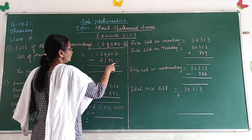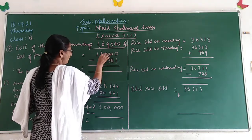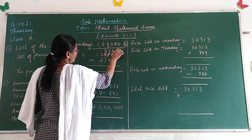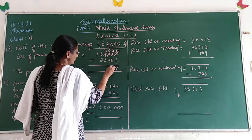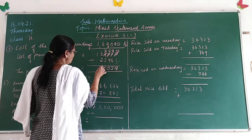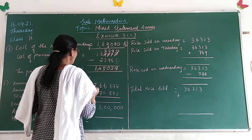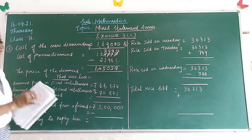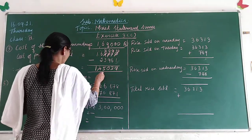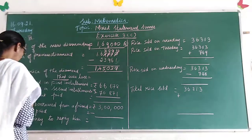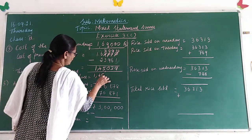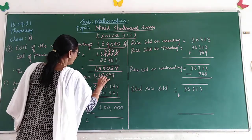So: cost of previous diamond ring = 1,69,000 minus 23,961. From 0 you cannot subtract, so borrow from the next column. Working through the subtraction: the answer is 1,45,039. So the price of the diamond ring that was lost is 1,45,039. This is how you have to do it, children.